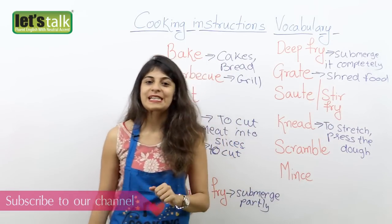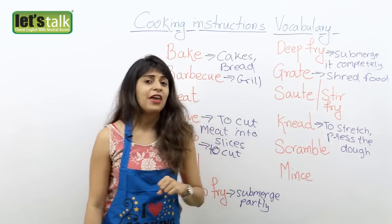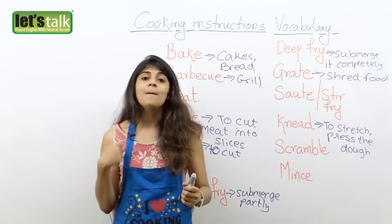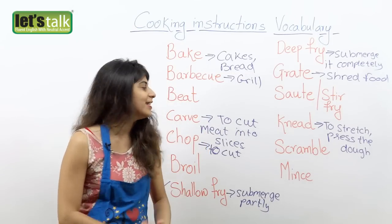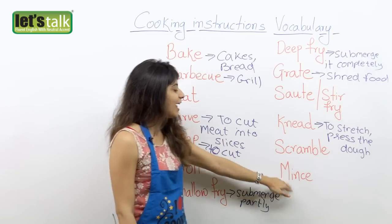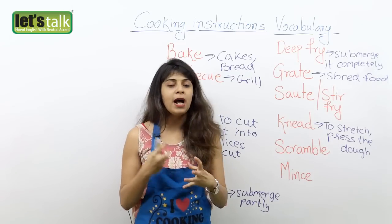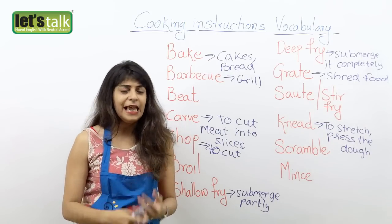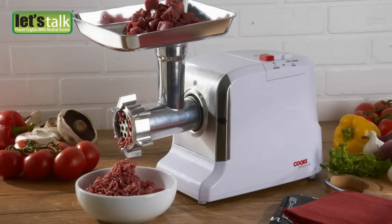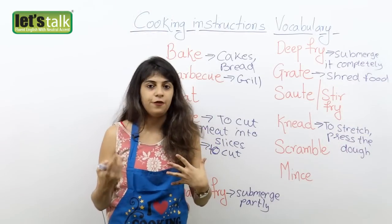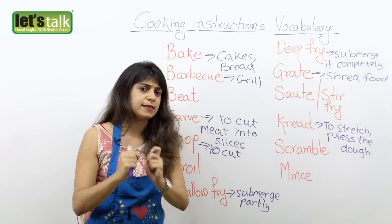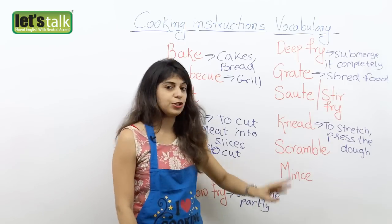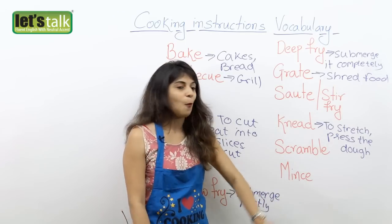Then the other one is scramble. Have you tried scrambled eggs? One of my favourite breakfasts. Scramble means when you mix the whites and yellows of an egg nicely. That's called scrambling — you scramble your eggs and then put them on a plate and eat with bread. And the last one is mince. Mince is when you cut your veggies or meat into extremely small pieces. We use a machine to mince meat because it's not easy otherwise.